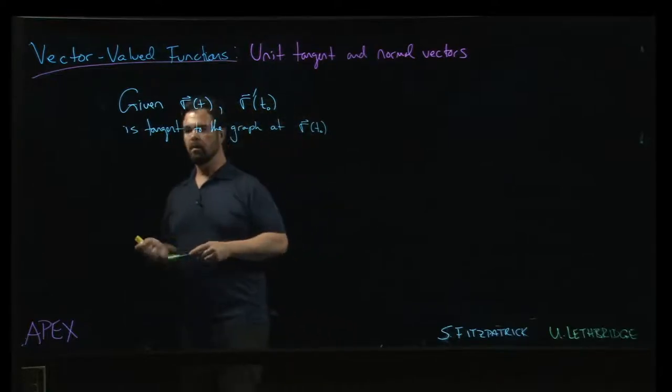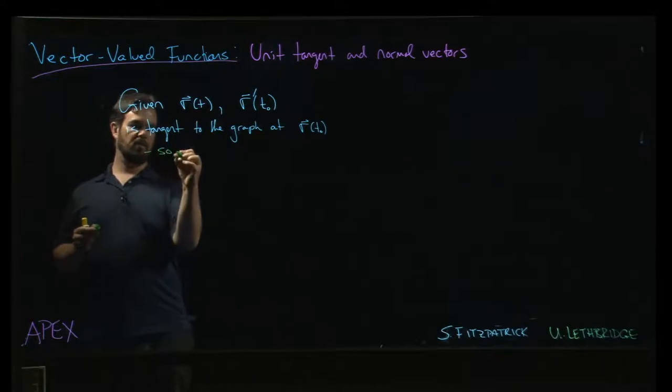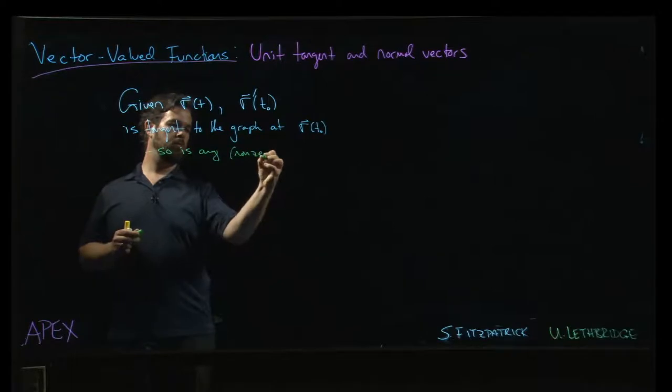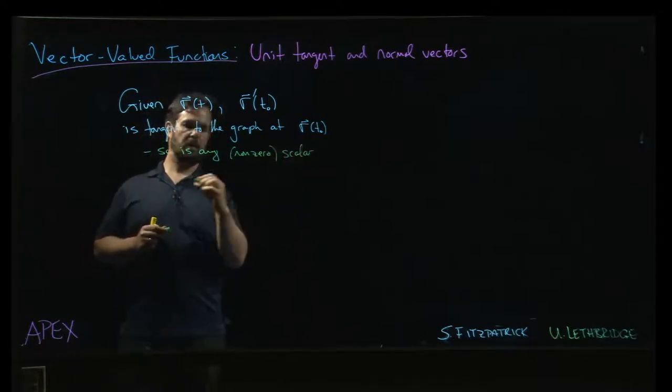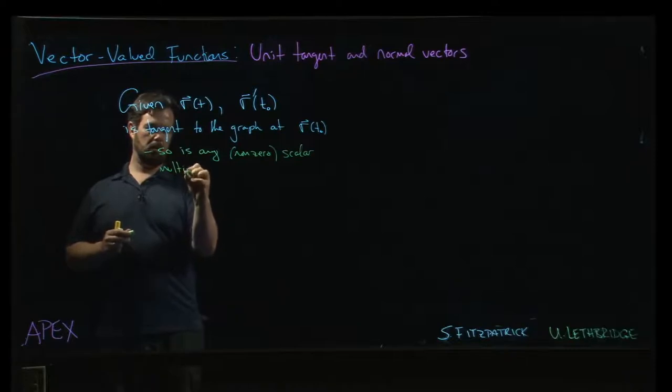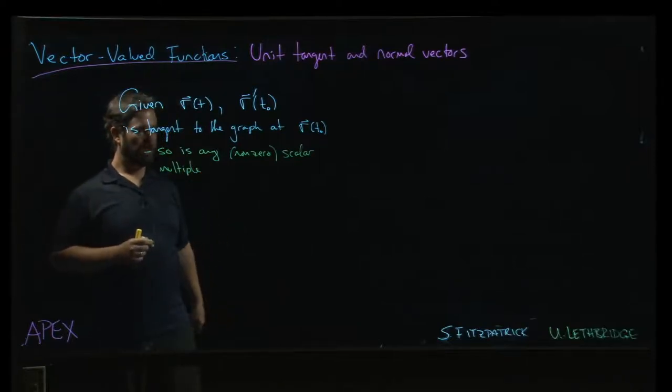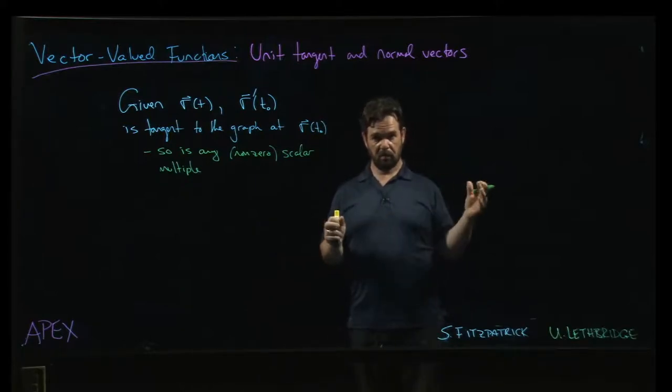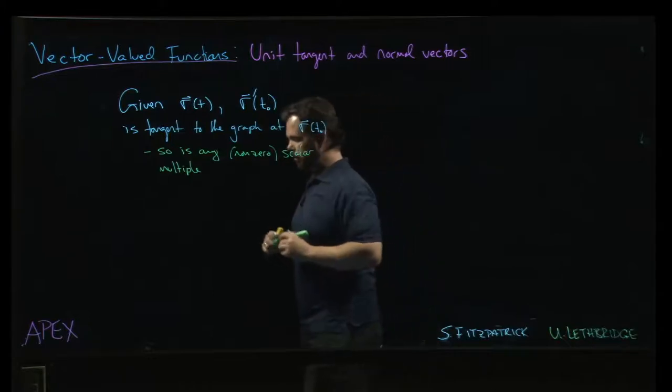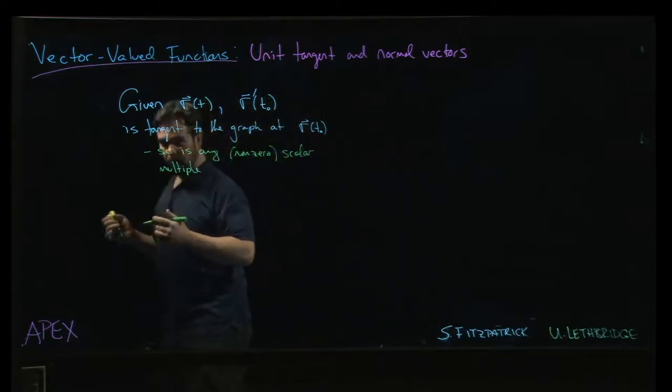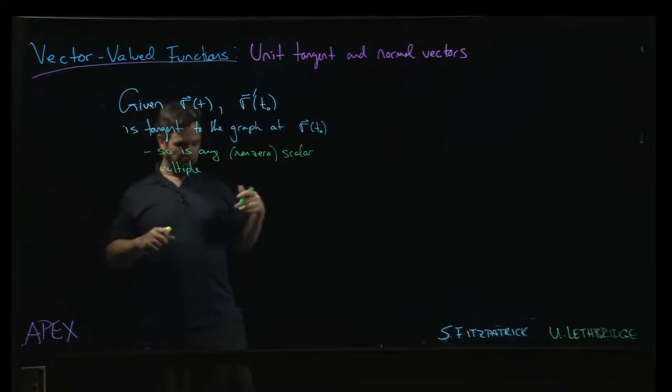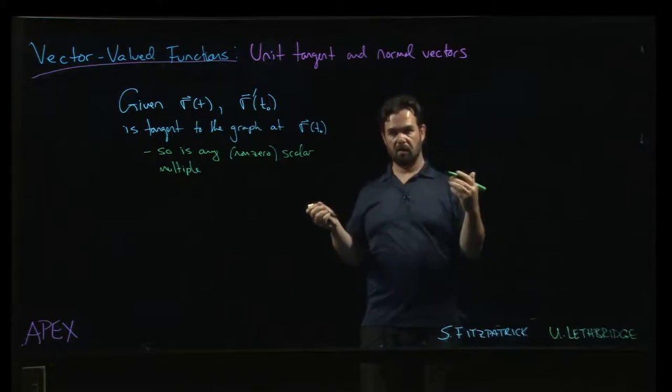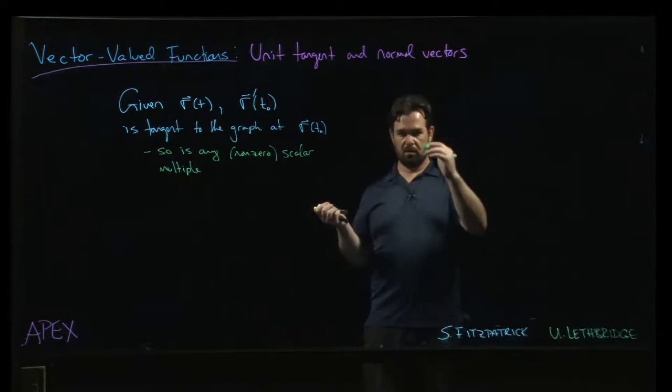Okay, but so is any non-zero scalar multiplier. And so if the thing you care about is the tangent direction and not so much the magnitude, the magnitude of r prime gives you this. If we're thinking about motion, particle motion or just motion in general, then we might also want to know about how fast something is going. But if we only care about the direction at a given point,